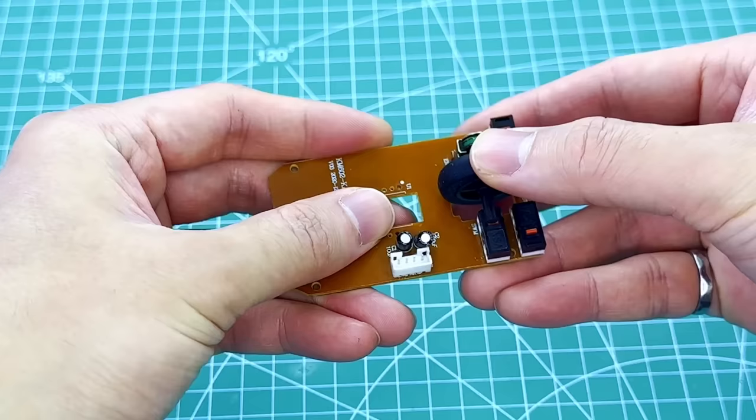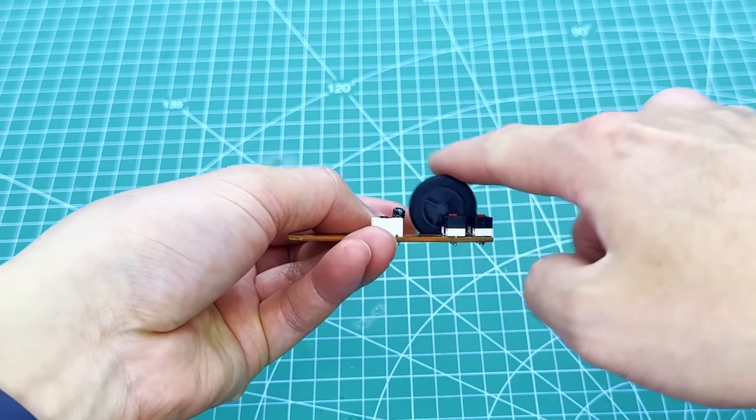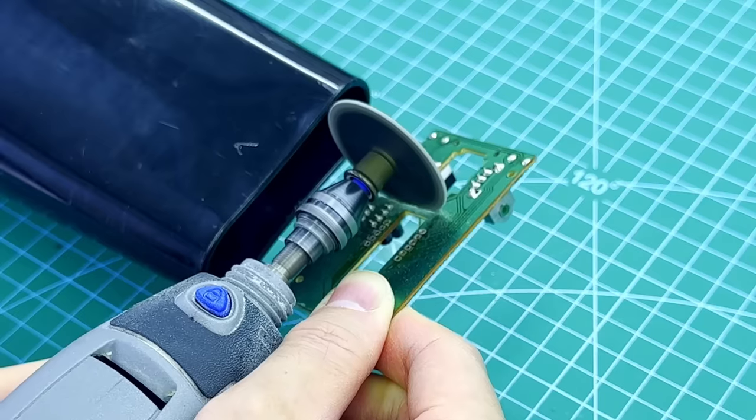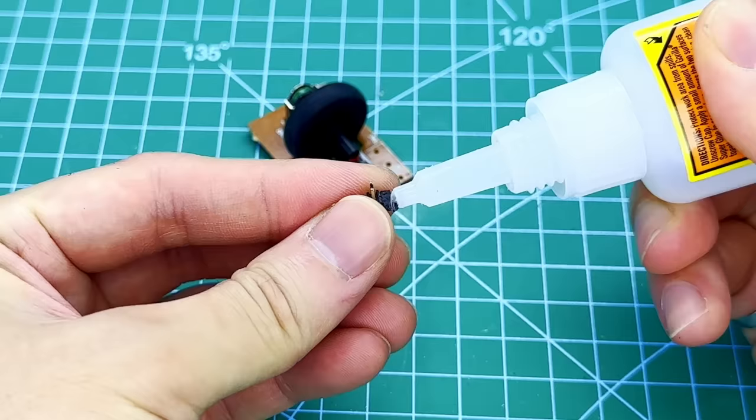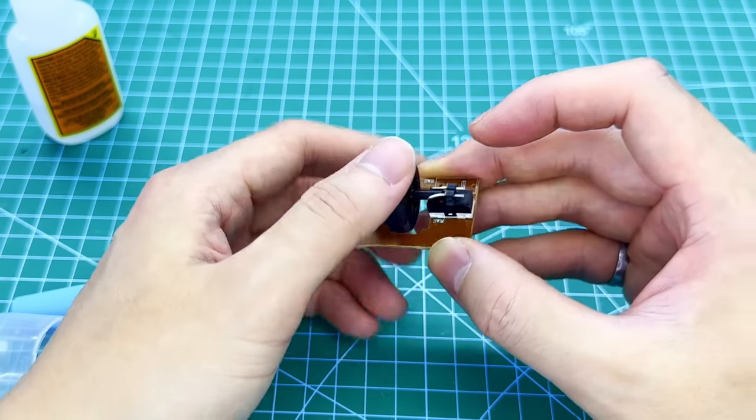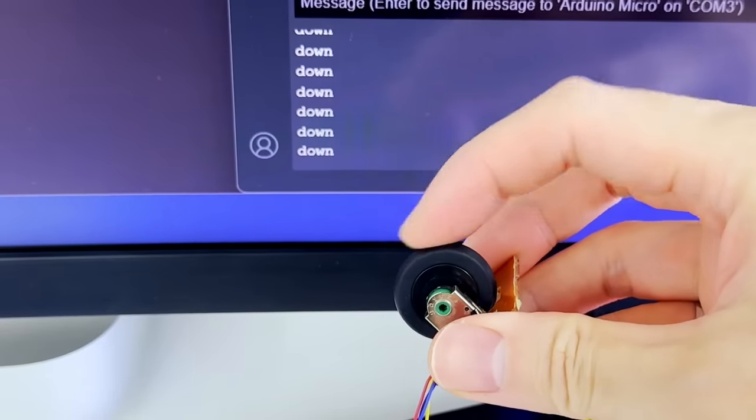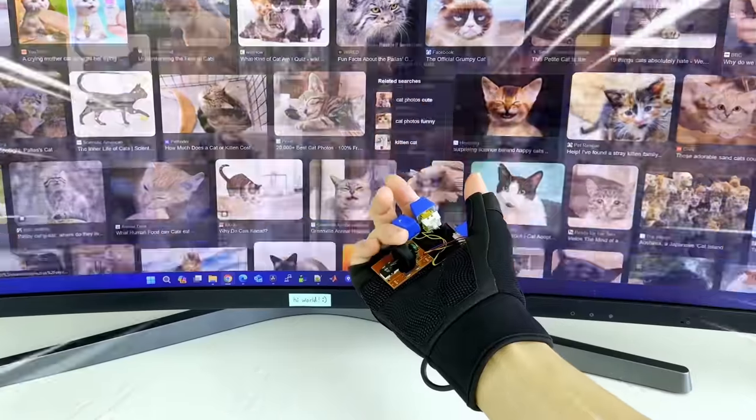Much better. By the way, while you weren't looking, I took apart an old mouse from our previous project and then I added a scroll wheel in our glove and programmed it to work with our Arduino.